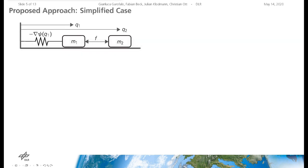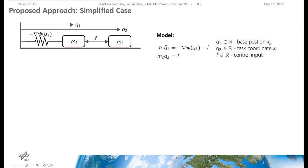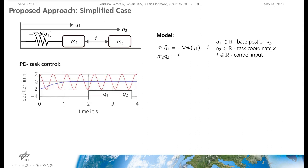The proposed approach is developed using the simplified model consisting of two masses. The first mass is attached to a spring and corresponds to the base. The position of the second mass defines the task coordinate. The control input is given by an internal force acting between the first and second mass. By applying a simple proportional derivative control on the task coordinate, the task can be controlled to the desired position. However, the first mass keeps oscillating in this case, so a more sophisticated control method is required to additionally stop the base.